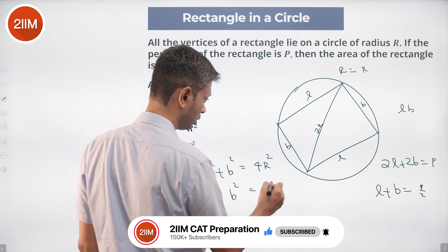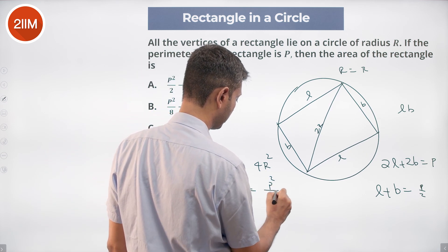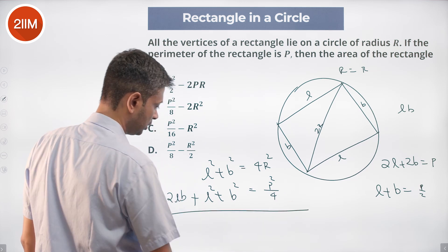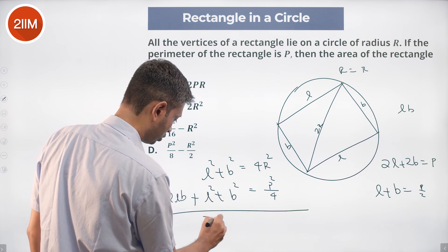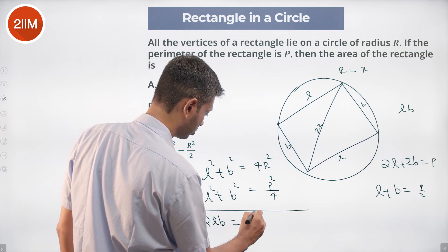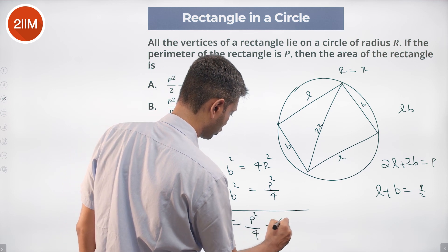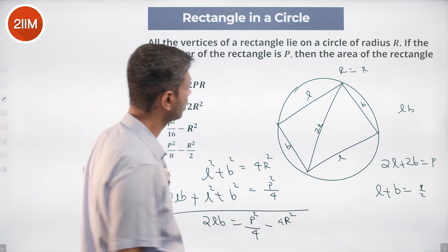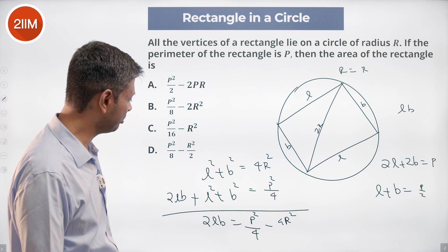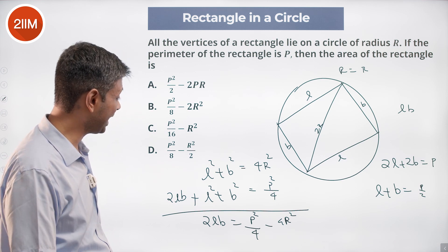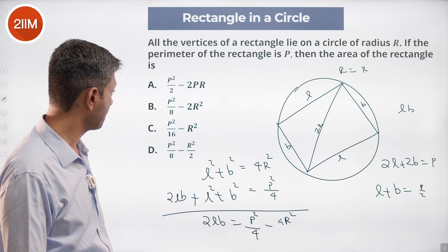Subtract this from this: 2LB equals P square by 4 minus 4R square. And the area of the rectangle is LB, which should be P square by 8 minus 2R square.